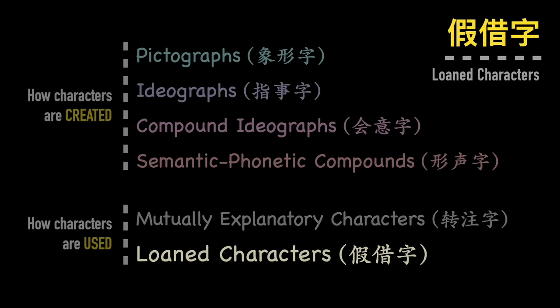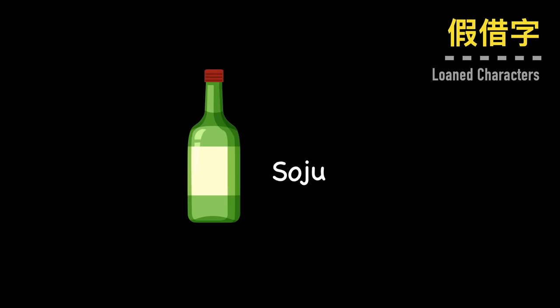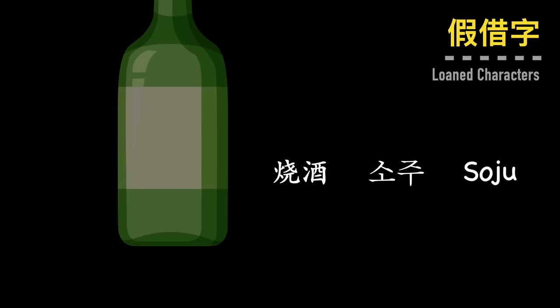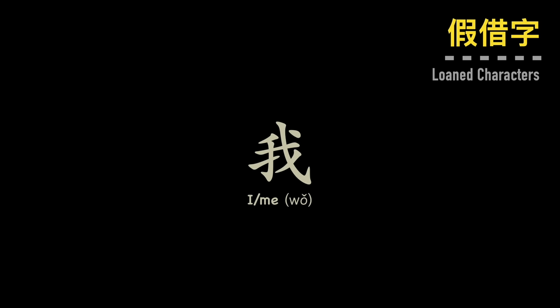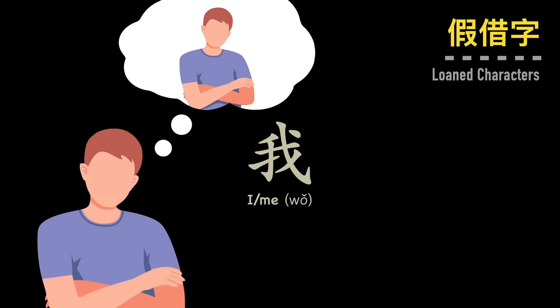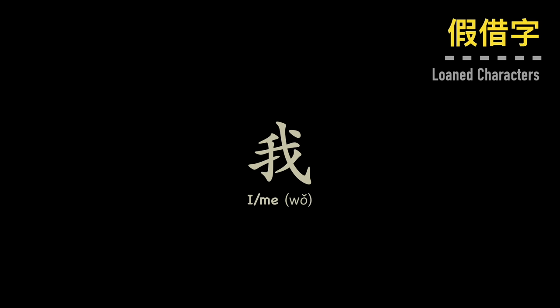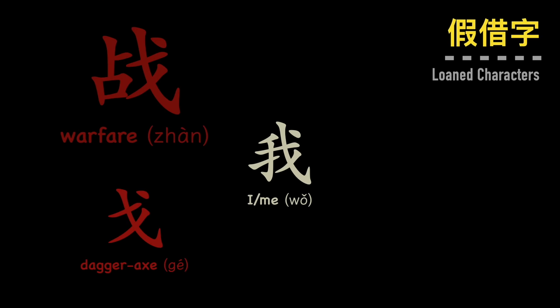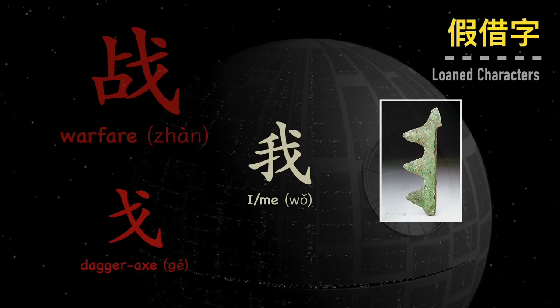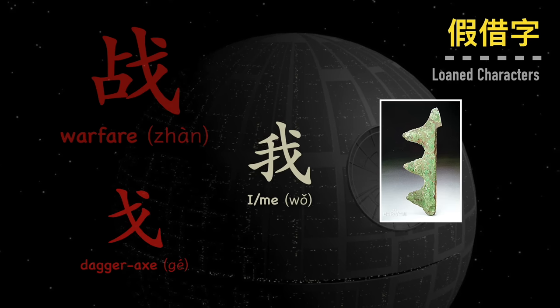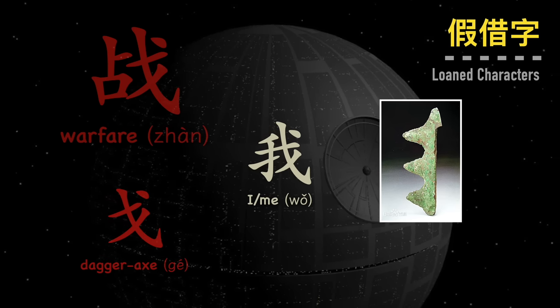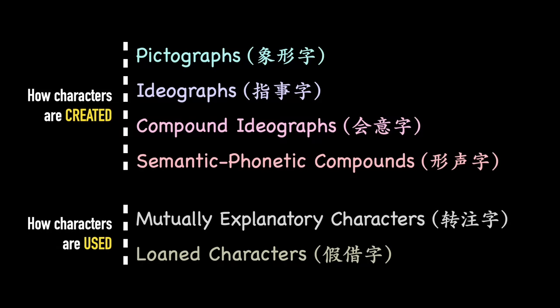Loan words seem to naturally occur in any language, so this is not a surprise at all. But loan words are inherently challenging to decipher because by nature they don't have to make sense — like the word soju, which is loaned from Korean, which is loaned from Chinese, and makes no sense at all in English unless you look at its origins. So let's take a look at a super common character like wo, which means the pronoun I or me. If you look at it visually, it doesn't seem like anything that would indicate oneself — because when this character was created, it had absolutely nothing to do with its current meaning. In fact, the wo character actually represented a weapon of war — a spearhead-like weapon with three sharp blades that would have been mounted on a pole.